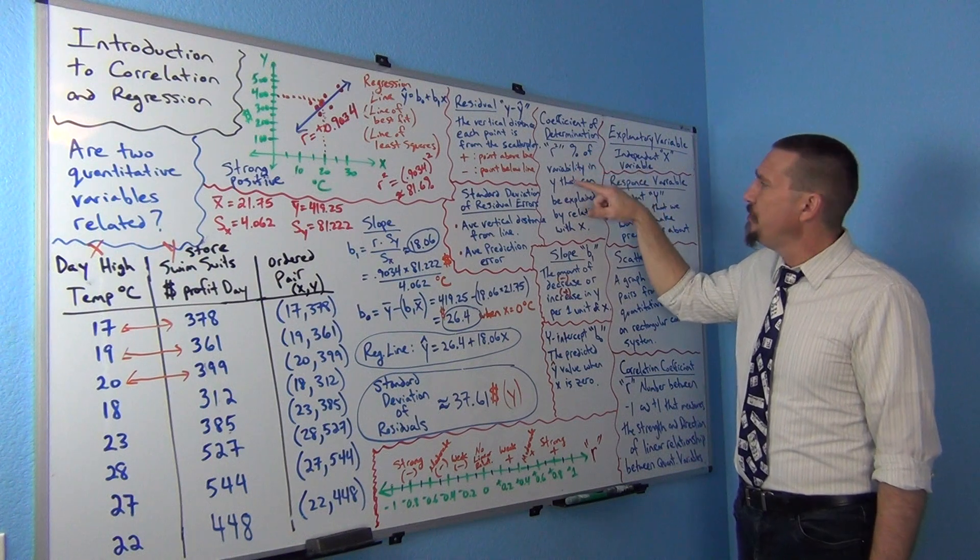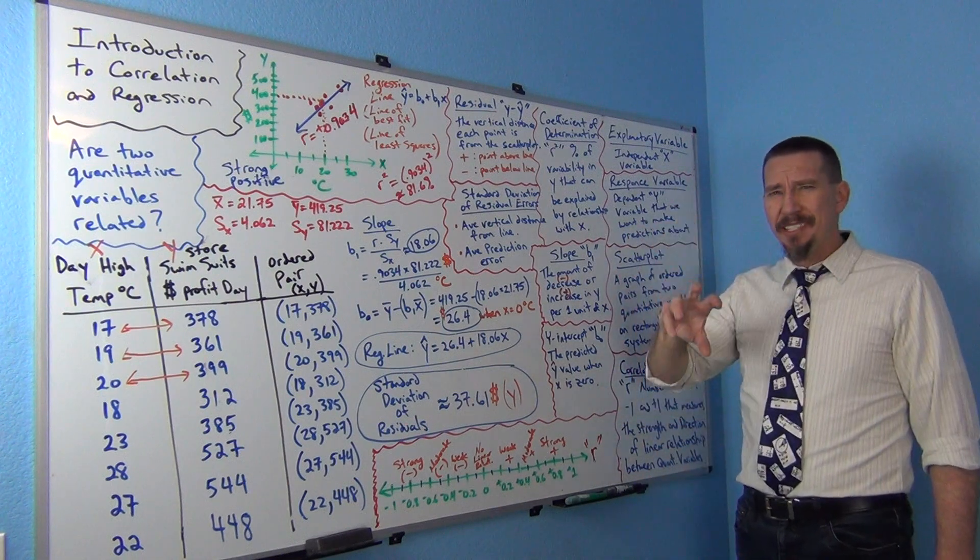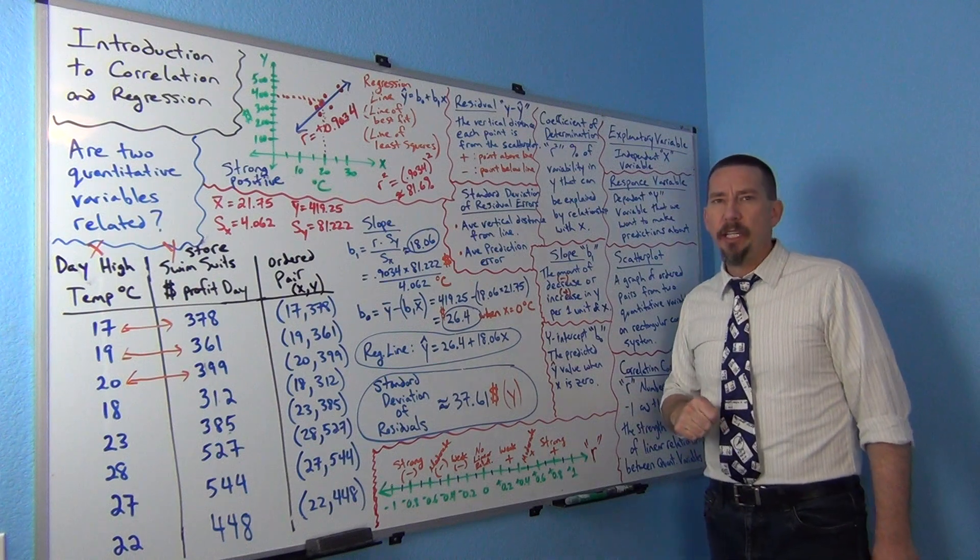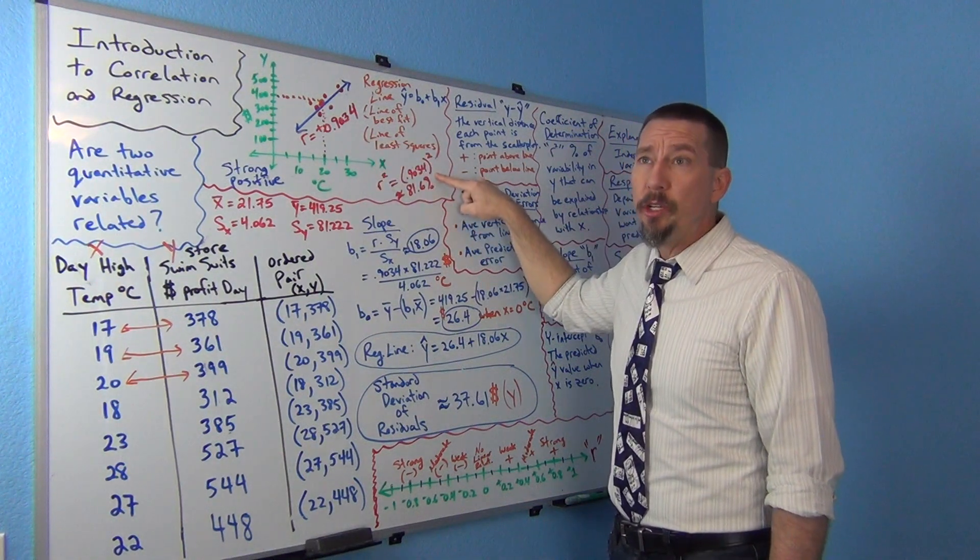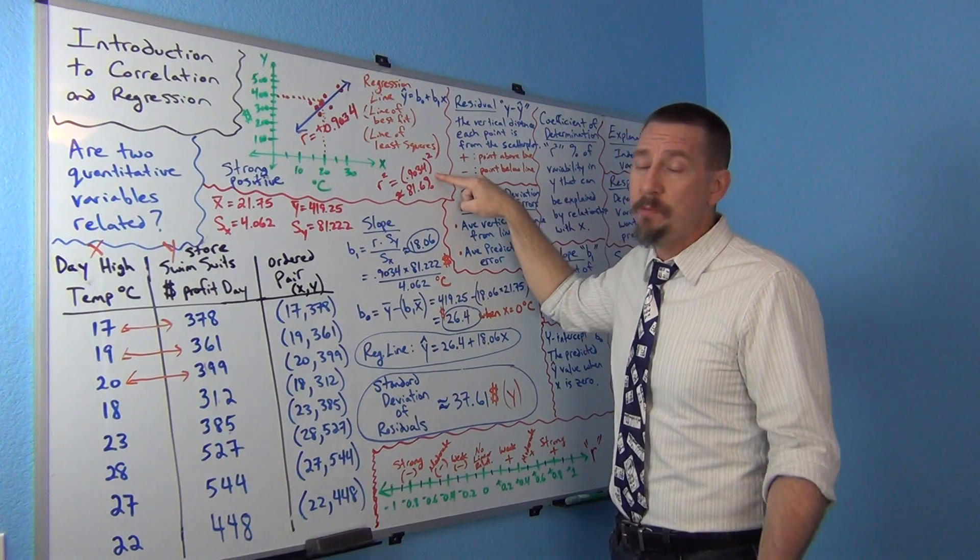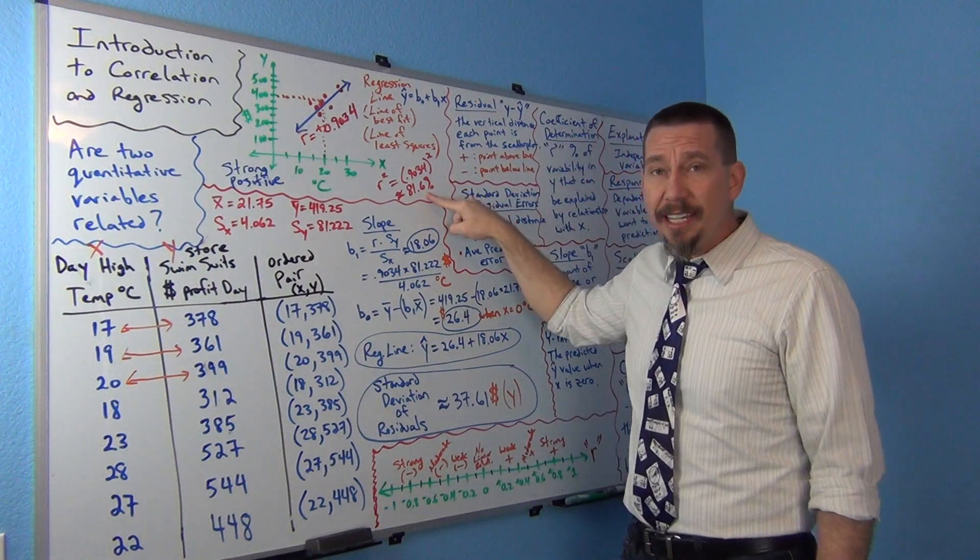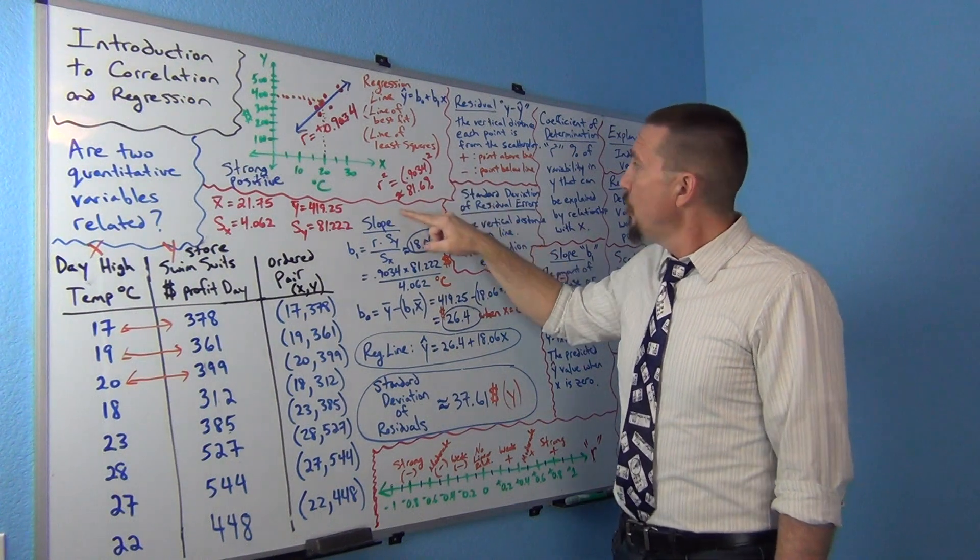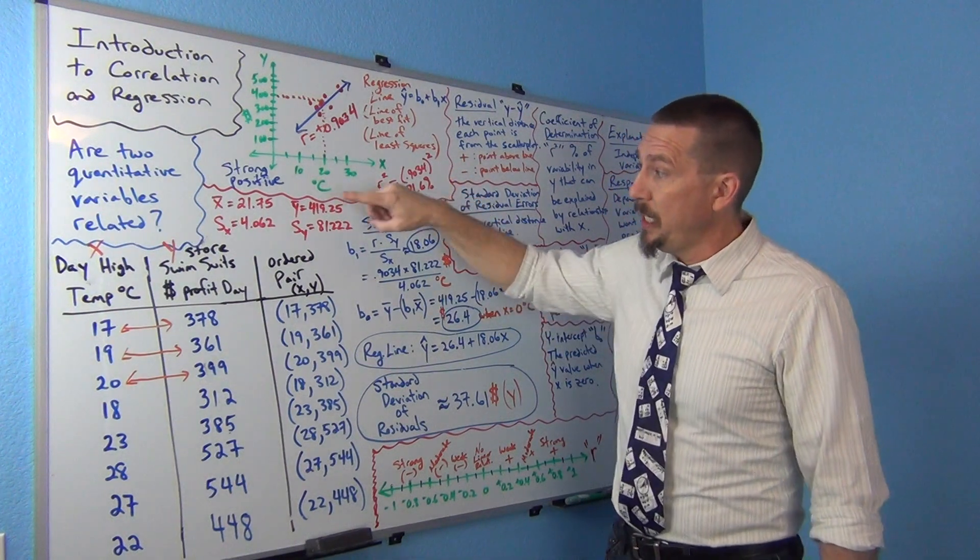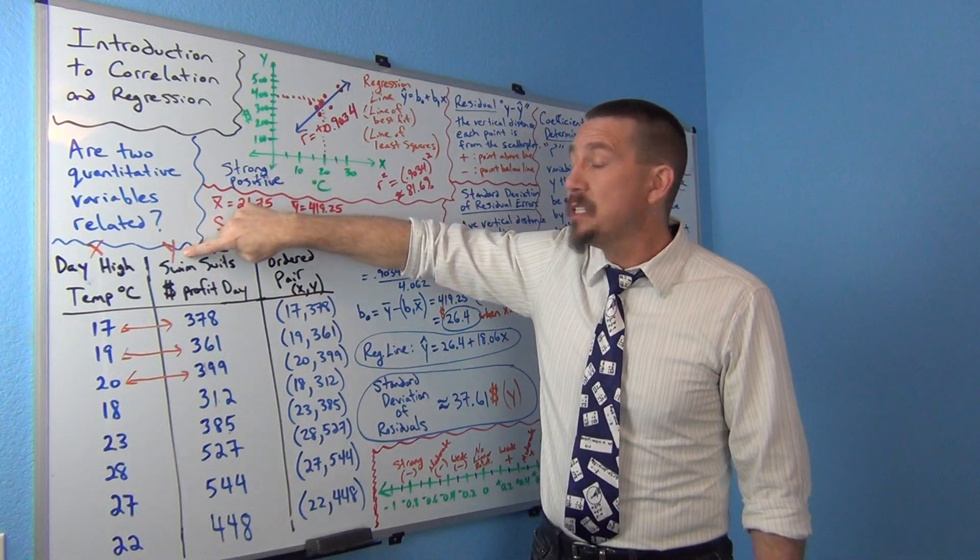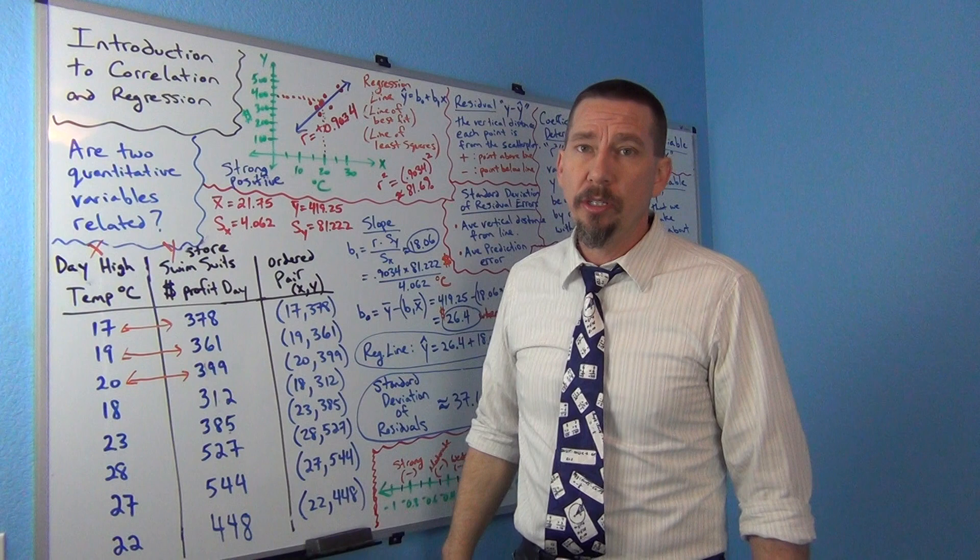So R squared is the percentage of variability in the Y that can be explained by the relationship with X. So always think of it as percentage of variability in the Y that can be explained by the relationship with X. So if I go back up here to our example, 0.9034 was my R. If I square that, remember you can push the square button on your calculator or just multiply 0.9034 times 0.9034 and I get about 0.816 or about 81.6%. So this would tell me that about 81.6% of the variability in Y in swimsuit profits can be explained by the relationship with X. It can be explained by the relationship with temperature. Okay? That's how I would explain it.